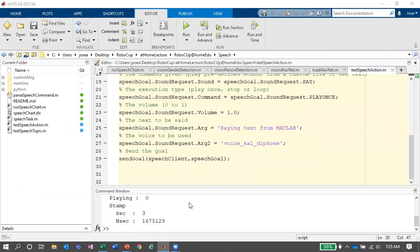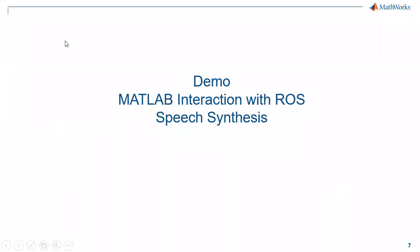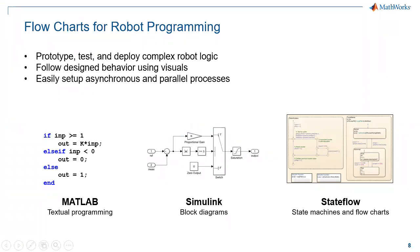Now we'll talk about flowcharts. Flowcharts are important tools to demonstrate the logic you're thinking of before programming it into the robot. Your basic option is to use if-else statements — logical conditioning where depending on conditions you take a set of actions. That works great, but as these start getting bigger and interacting with each other they get really complicated, and it might be difficult to keep track of what's happening.